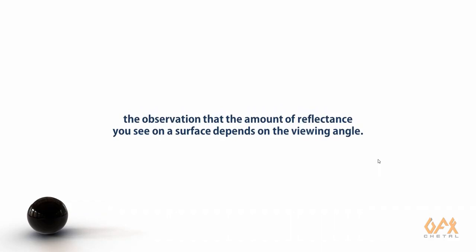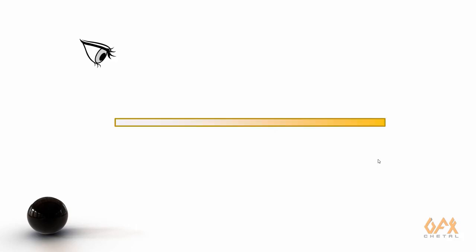What is the Fresnel effect? It is the observation that the amount of reflection you can see on a surface depends on the viewing angle. This is the basic definition of the Fresnel effect. Here is a side view of a surface and my view angle to illustrate how this effect works.